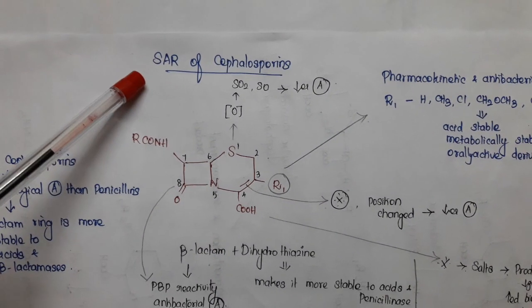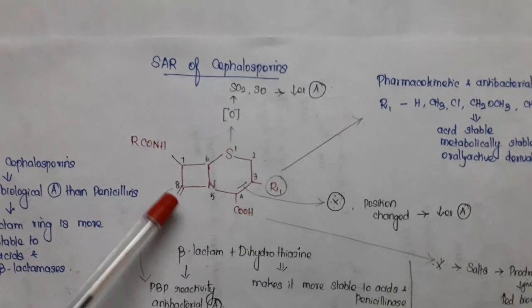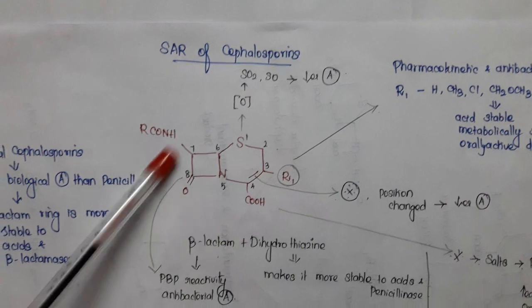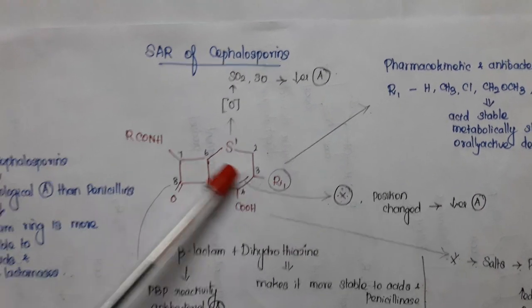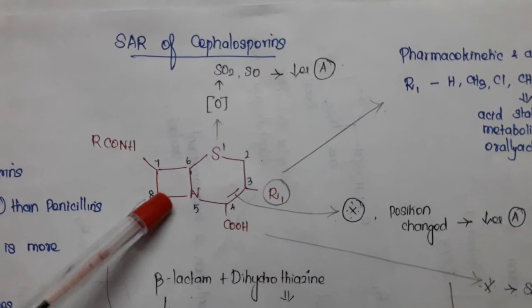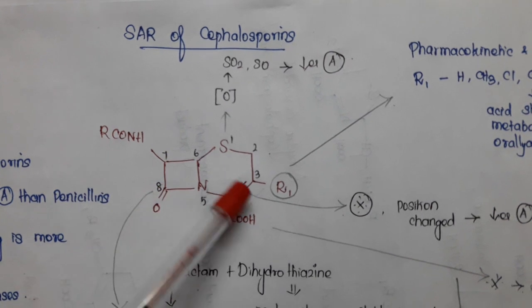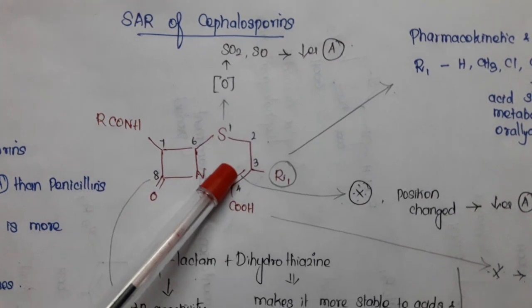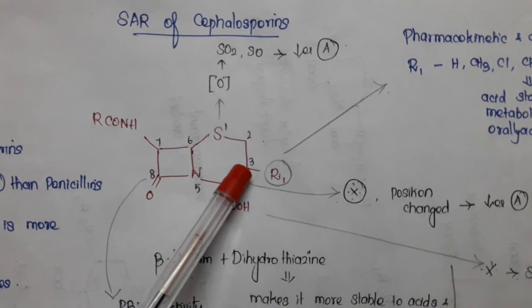Students, today we will see SAR of cephalosporins. Already we have known the basic ring for cephalosporin. It is a fusion of two rings — the beta-lactam ring, and that is fused with the dihydrothiazine ring.